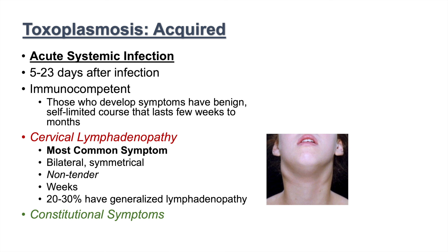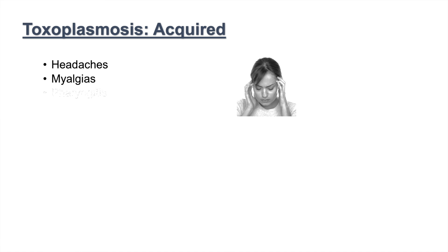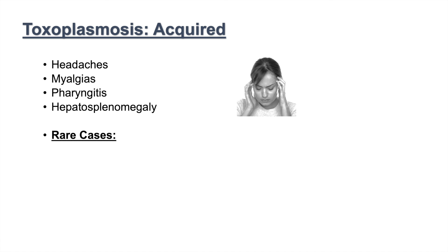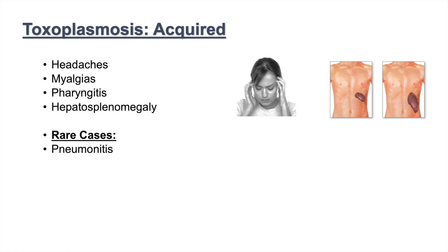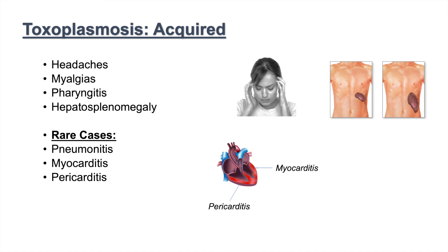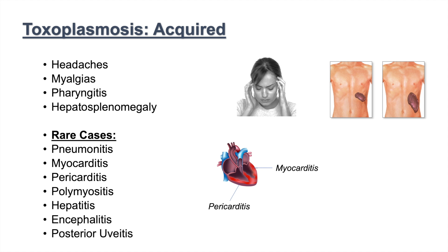There can also be constitutional symptoms such as fever, chills, and sweats, usually occurring for two to three days. Other symptoms can include headaches, myalgias, pharyngitis, and hepatosplenomegaly — an enlargement of the liver and spleen. In rare cases, toxoplasmosis can lead to pneumonitis, myocarditis, and pericarditis. Myocarditis is inflammation of the cardiac muscle, and pericarditis is inflammation of the pericardium surrounding the heart. It can also lead to polymyositis, hepatitis, encephalitis, or posterior uveitis.